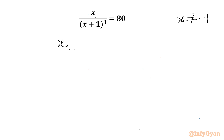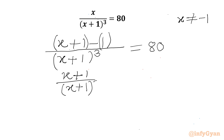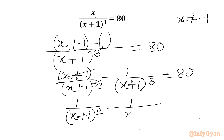We have x over (x plus 1) whole cube equal to 80. Now I will add 1 and subtract 1 in the numerator and split the numerator with respect to the denominator. So I can write (x plus 1) over (x plus 1) whole cube minus 1 over (x plus 1) whole cube equal to 80. This simplifies so that x plus 1 cancels, leaving 1 over (x plus 1) squared minus 1 over (x plus 1) cubed equal to 80.